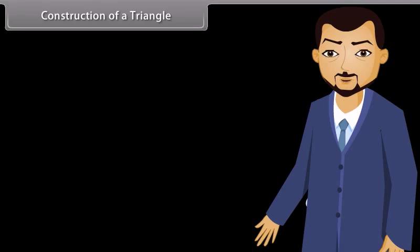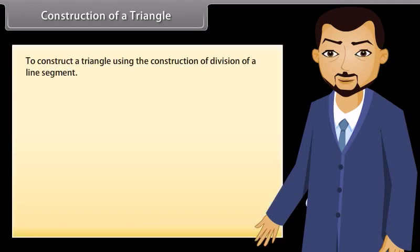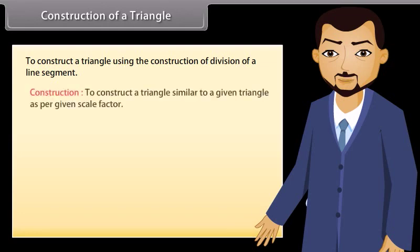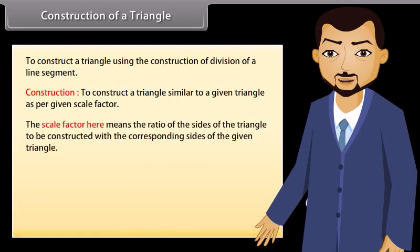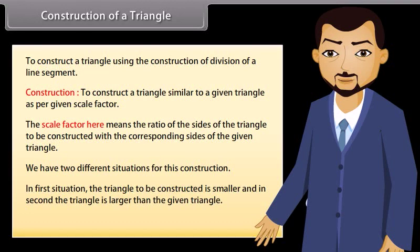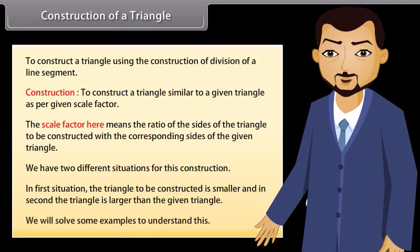We will now learn to construct a triangle using the construction of division of a line segment. To construct a triangle similar to a given triangle as per a given scale factor. The scale factor here means the ratio of the sides of the triangle to be constructed with the corresponding sides of the given triangle. We have two different situations: the triangle to be constructed is smaller, and the triangle is larger than the given triangle. We will solve some examples to understand this.